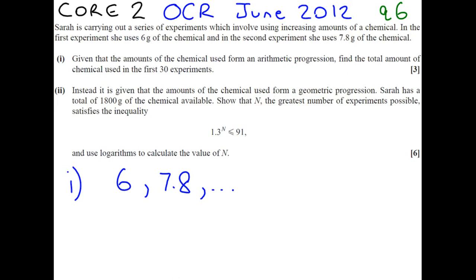Now if we read the first part of the question, it says given the amount of chemical used, form an arithmetic progression. Key word, find the total amount of chemicals used in the first 30 experiments. So we don't know for sure, but we're told that it could be that it's an arithmetic progression. Which means you start with a value and for the next value you add on a common difference, which we call D.